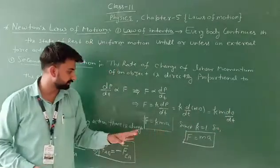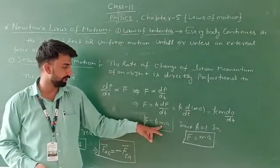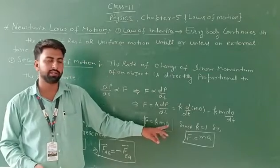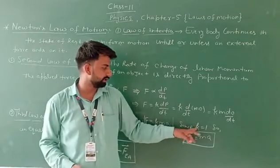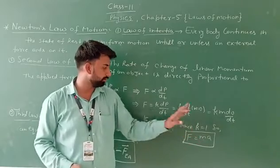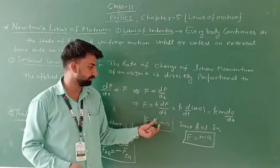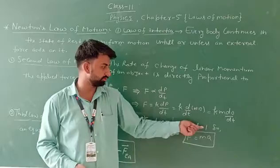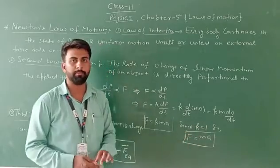dv/dt is the acceleration. So F is equal to k times m times a, where a is the acceleration. Since k is equal to 1, because k is the proportionality constant, so consider k equals 1, so F equals ma.